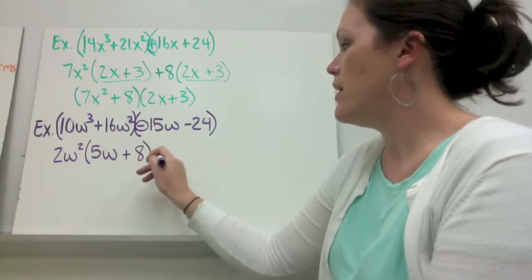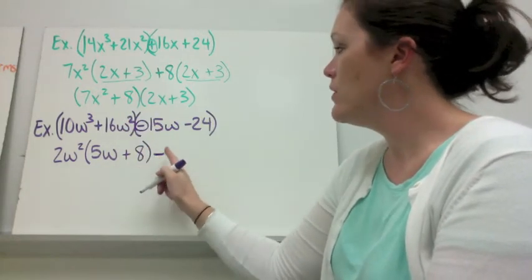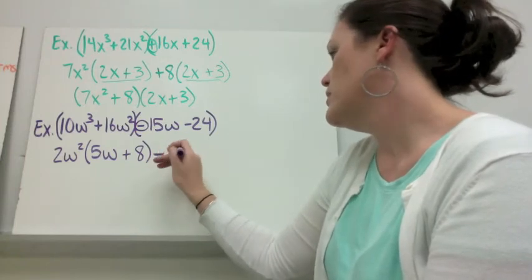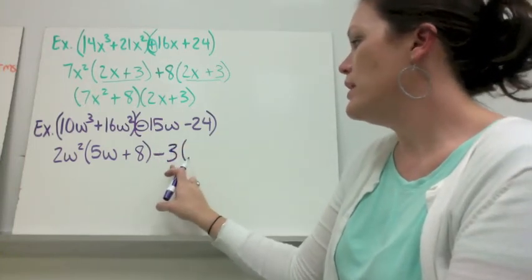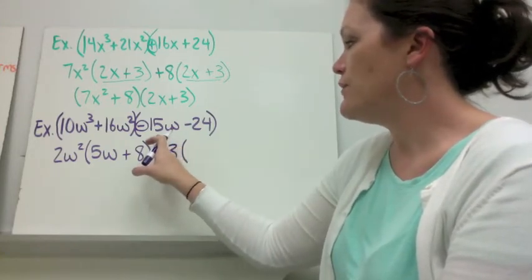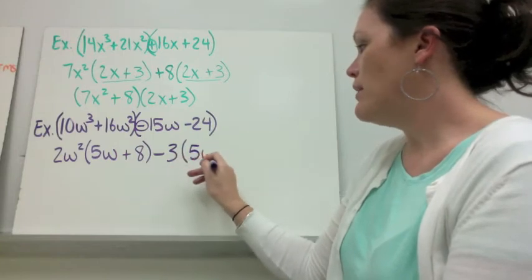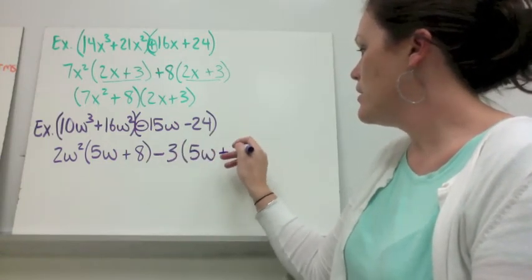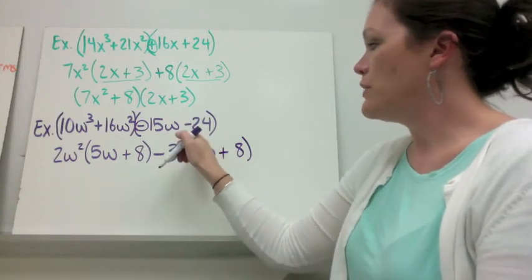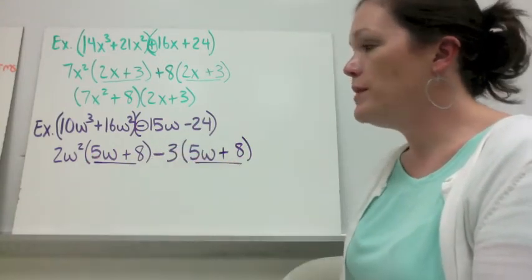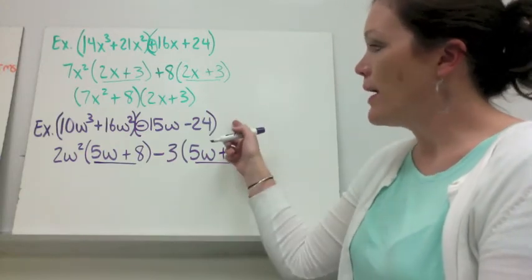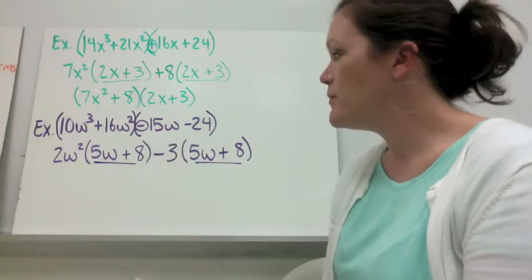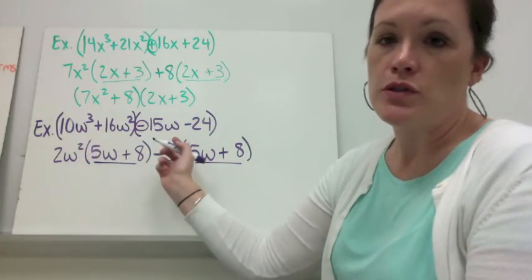Always look at the third term and take out the sign that's there. So I need to take out a negative, and then look at 15 and 24 — they would have a 3 in common. So I take out negative 3. Negative 3 times 5w would give me back negative 15w, and negative 3 times 8 would give me back negative 24. Notice again I have a common factor — in grouping that should always happen. If it does not, you might have to go back and regroup the terms. For instance, you could put the first and third terms together and reorganize your polynomial. But most of the time it works to group the first two and the second two together.